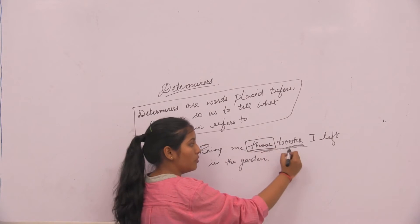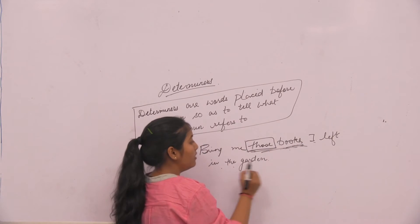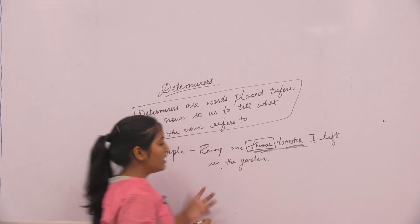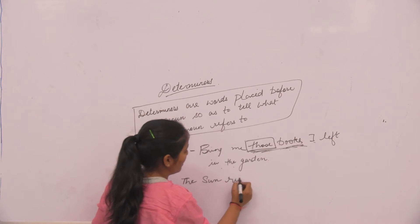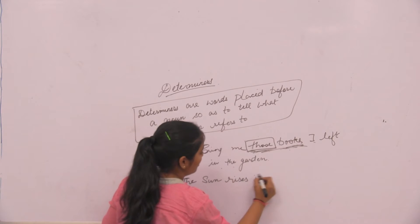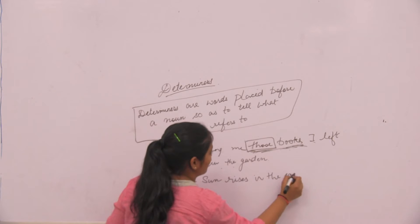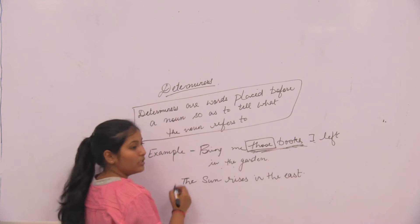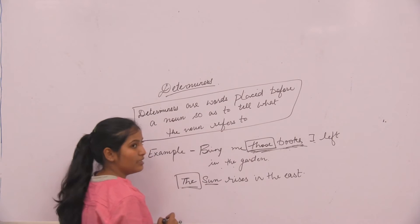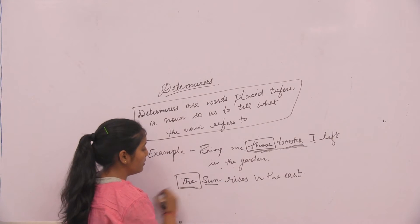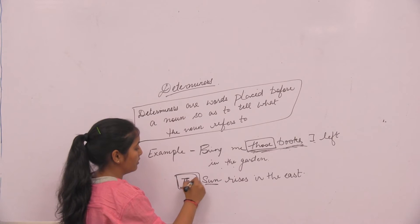Next example: the sun rises in the east. Here the determiner is the. The noun is sun and we are referring to the sun, that is the.